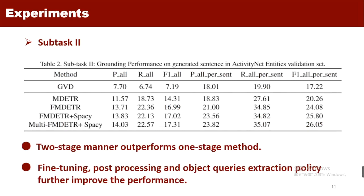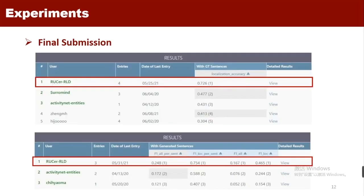For subtask 2, we simultaneously evaluated the captioning performance and grounding performance. In general, our two-stage manner outperforms one-stage method GVD. What's more, fine-tuning, post-processing and object queries extraction policy with spaCy further improved the overall performance, F1OR, to 26.05. In final submission, our model achieves localization accuracy of 72.57 for subtask 1 in the testing set, and F1OR of 24.77 for subtask 2 in the hidden test set, which ranks first for both subtasks.